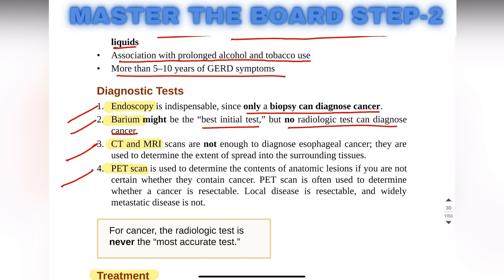CT and MRI are done just to know the extent of spread into the surrounding tissue. PET scan is performed to see if the disease is local and resectable, or if it is metastatic and cannot be resected.